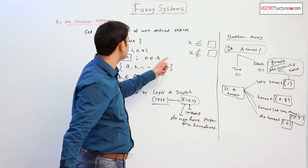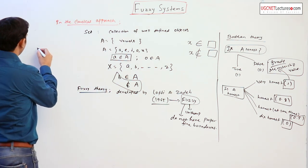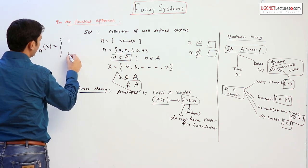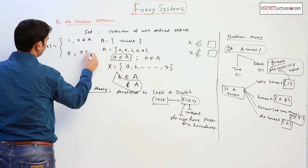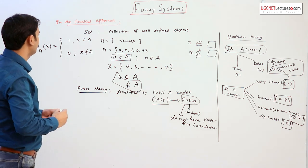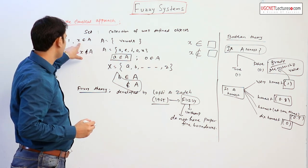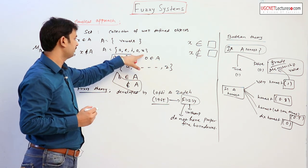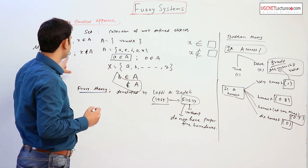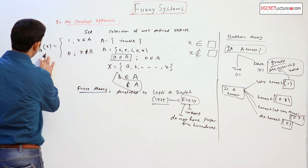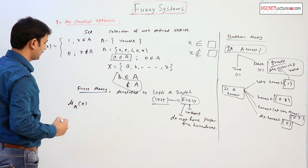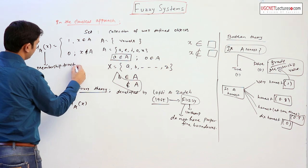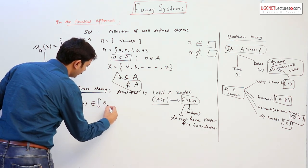Why is this introduced? In the classical theory, this grade is generally denoted as mu_A(x), where x is the element in X. The grade is either 1 or 0. So, in the classical theory, grade 1 means that element belongs to that set — for example, A, E, I, O, U each have grade 1, but B, not belonging to the set, has grade 0. But in fuzzy theory, this grade — the membership function — belongs to the interval [0, 1], meaning it can be 0, 1, or any value in between.